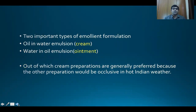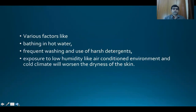There are two important types of emollient formulations. They are oil-in-water emulsion, what we call cream, in which water is the major component; and water-in-oil emulsion, what we call ointment, in which oil is the major component. Cream preparations are generally preferred because ointments would be occlusive in hot Indian weather.